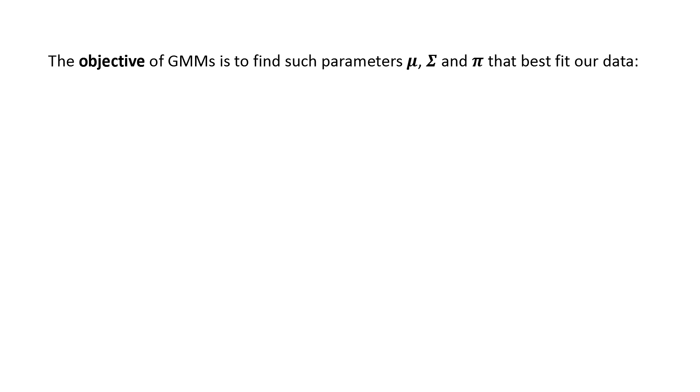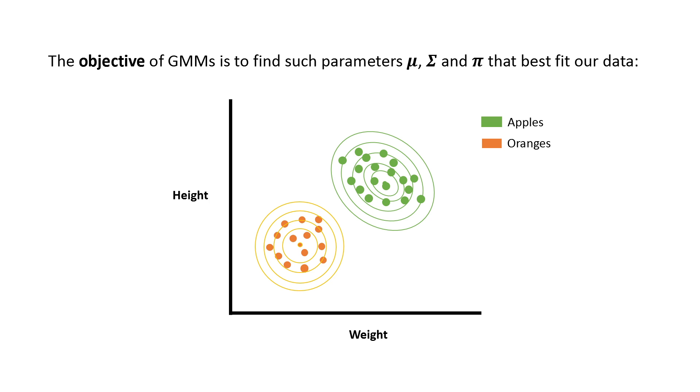Now the objective of GMMs is to find parameters mu, sigma, and pi that best fit our data. Here two multivariate Gaussian distributions have been fit to our data.